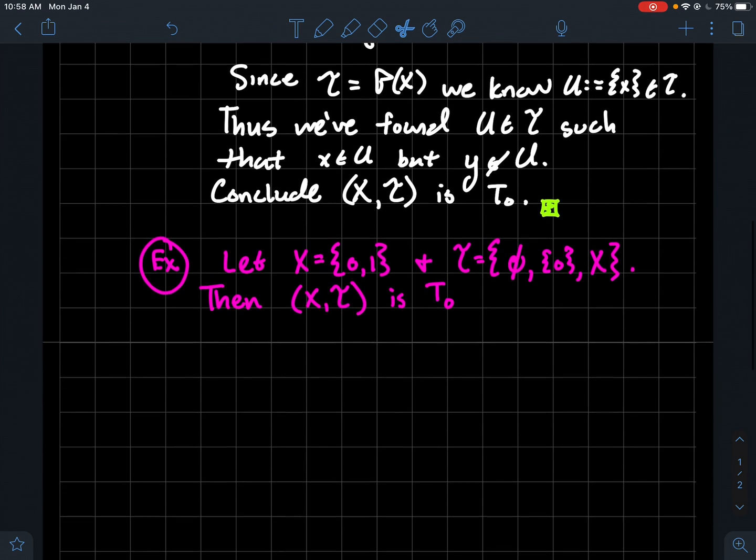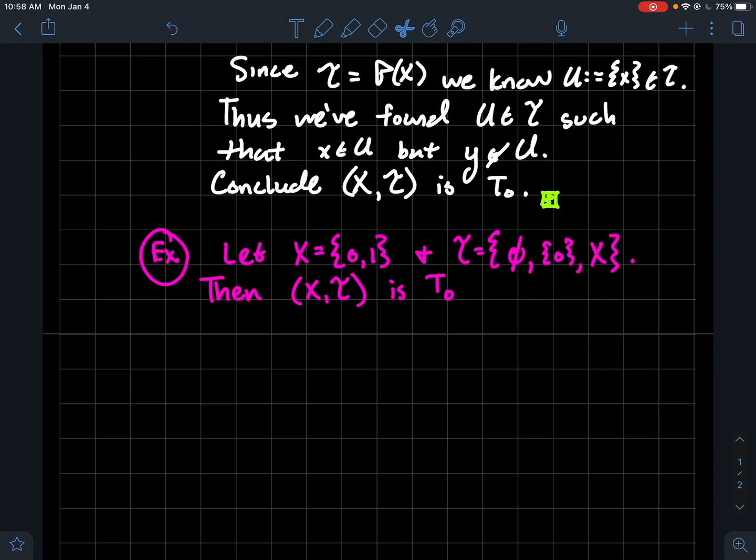The next thing we'll look at is a tiny bit more interesting. So let's let X just be this two element set. Say it's got 0 and 1 in it. Or maybe I could have just said it's got a and it's got b in it.